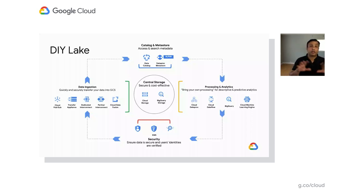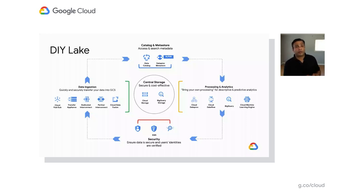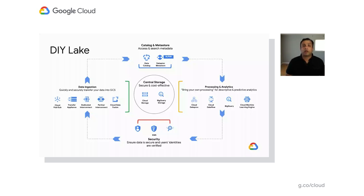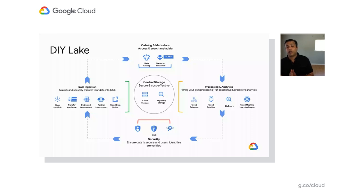Bringing all these together still requires some effort connecting them. You would have to catalog all your data — while BigQuery data is automatically registered in Data Catalog, there is effort required to catalog data in Cloud Storage. Dataproc Metastore, a new addition to the GCP family, provides the much-awaited technical metadata registration for structured data, allowing it to be exposed to popular open source tools that can be run on Dataproc.